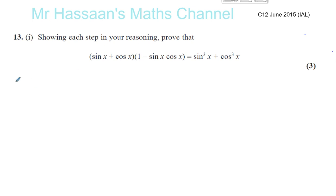So sin x times 1 is sin x. And sin x times sin x cos x is minus sin squared x cos x. Then you've got cos x times 1, which is plus cos x. Then you've got cos x times minus sin x cos x, which is minus sin x times cos squared x.